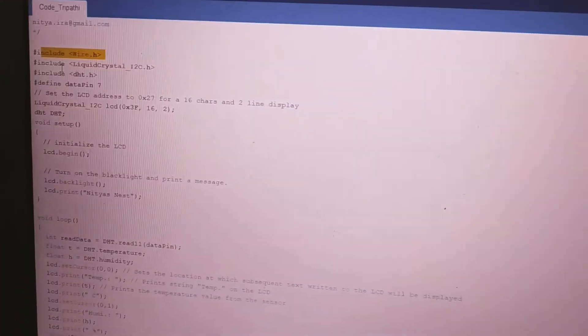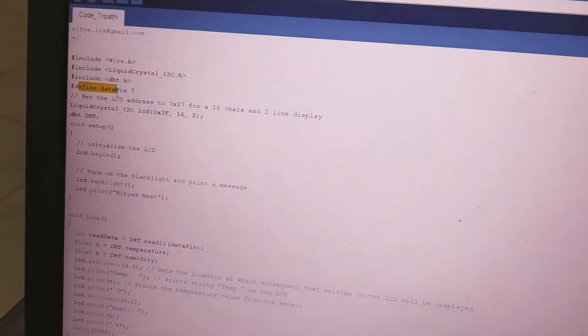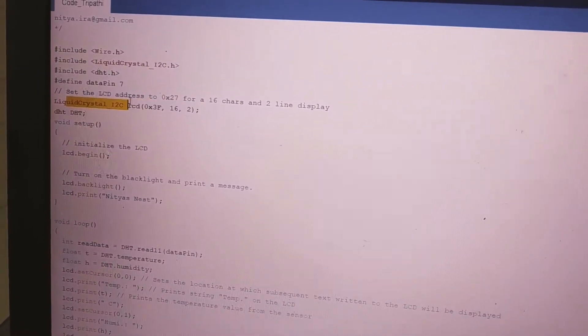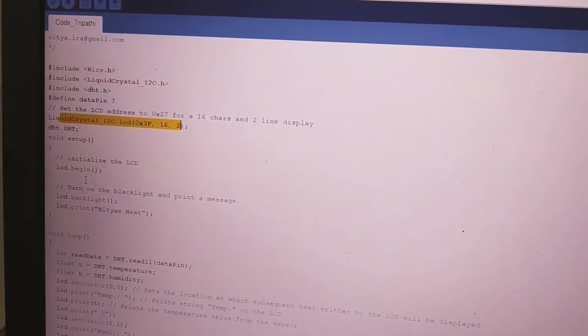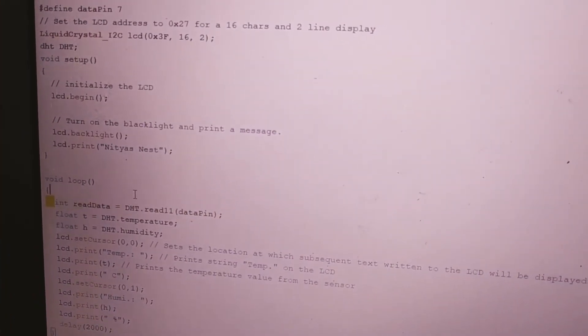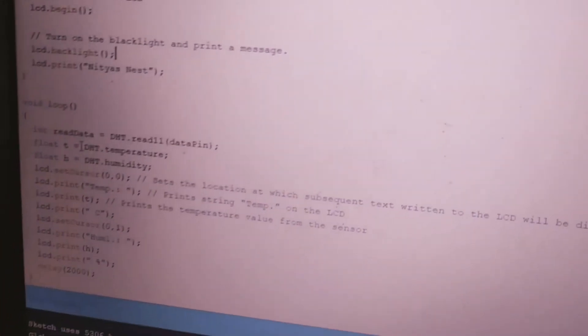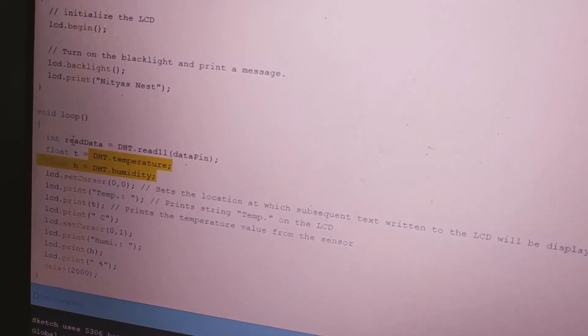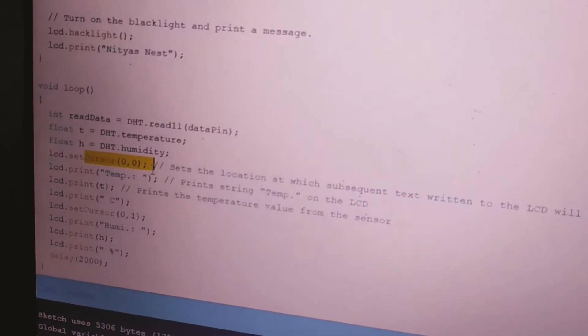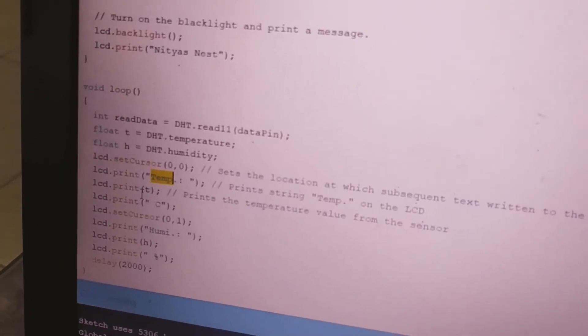First we are going to include all the libraries and then define the data pin 7. The data pin 7 is the pin from which we will get the output. This is the type of liquid crystal and the pins we have used. Here it reads data from the data pin, which is 7. The variable for temperature is T and for humidity is H. If you want to write something in the first line, you have to write 0,0 and then whatever you want to write. We have written 'Temp' at 0,0 for temperature, and this is the variable.